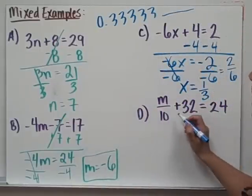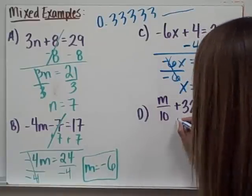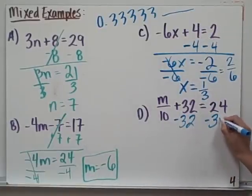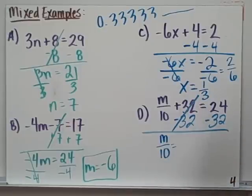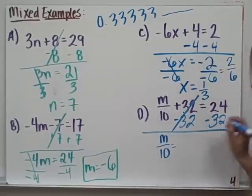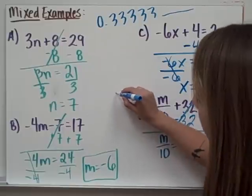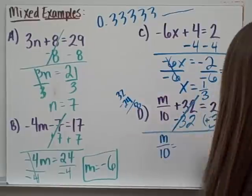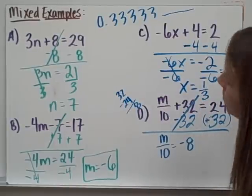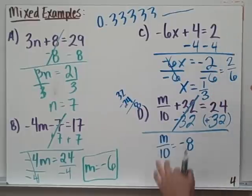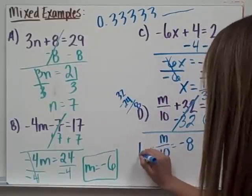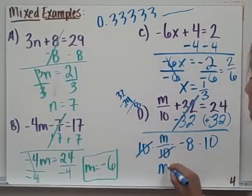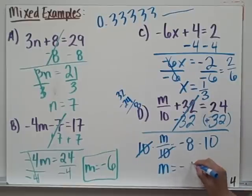Lastly, m divided by 10 plus 32 equals 24. So I'm going to subtract 32 from both sides first. That leaves me with 0. I have m divided by 10 equals, well this is an interesting situation. 24 minus 32. 32 is larger, so technically if I wanted to, I could say plus a negative 32. Signs are different. Find the difference. 32 minus 24 is going to be 8. So this is going to be negative 8. So then, if I have m divided by 10 equals negative 8, what number divided by 10 would give me negative 8? Well, we can find that by multiplying by 10 on both sides. And when I multiply by 10, this leaves me with 1m equals negative 8 times 10, which is negative 80.